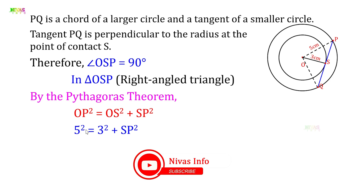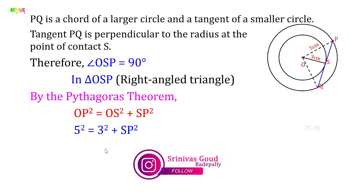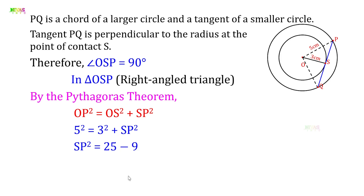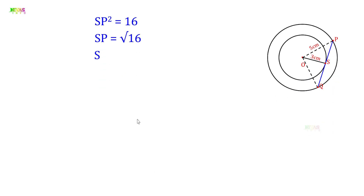Now, 5 squared is 25 and 3 squared is 9. So SP² = 25 − 9. Therefore SP² = 16. Taking the square root, SP = √16 = 4 centimeters.